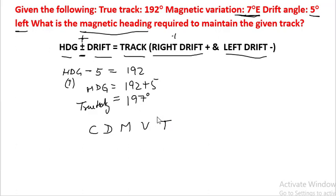True heading is 197. Variation is 7 degrees east. Sorry, this is 197, not 192.